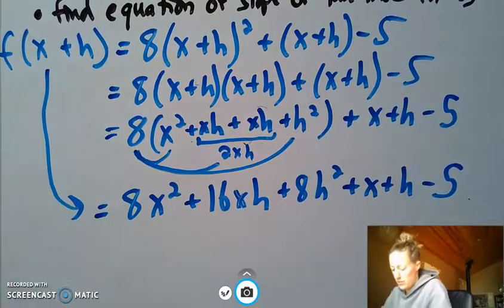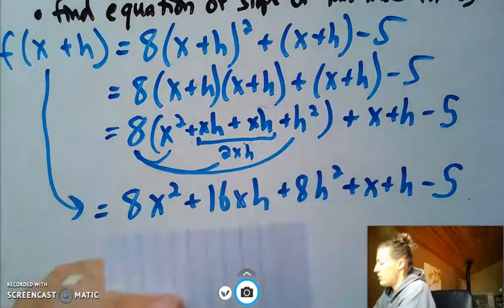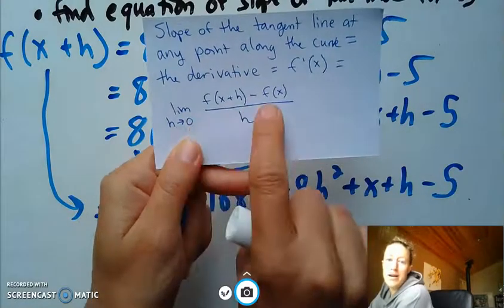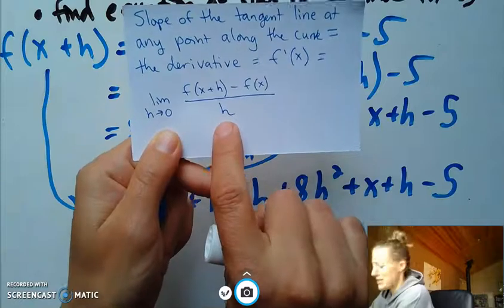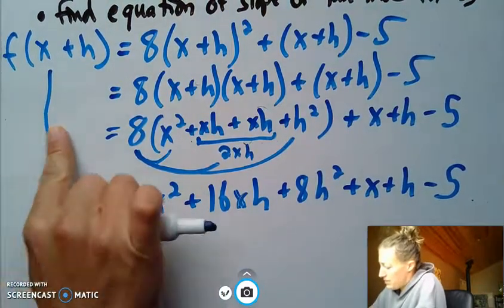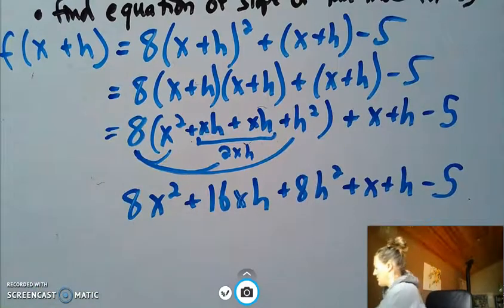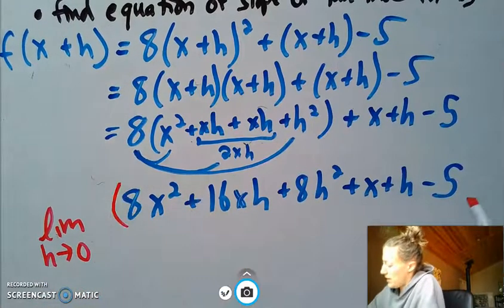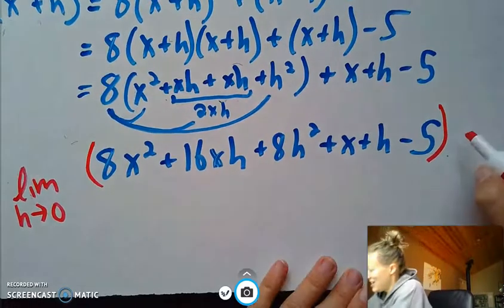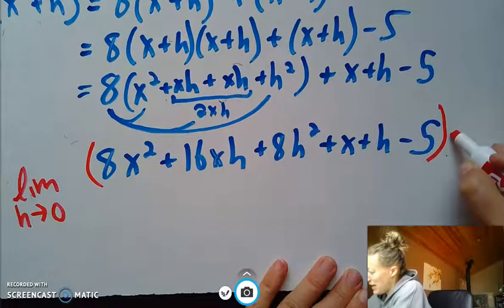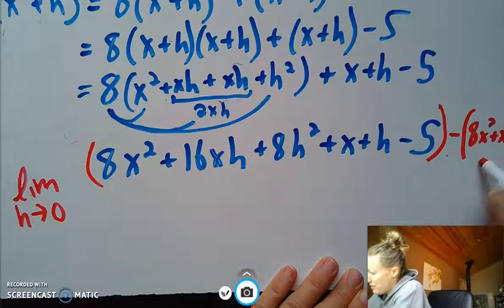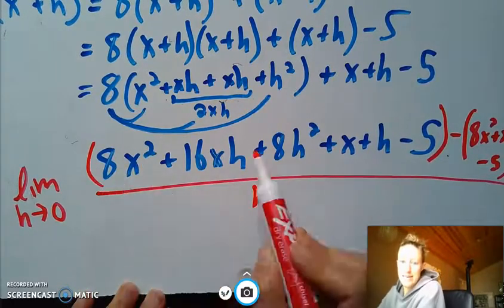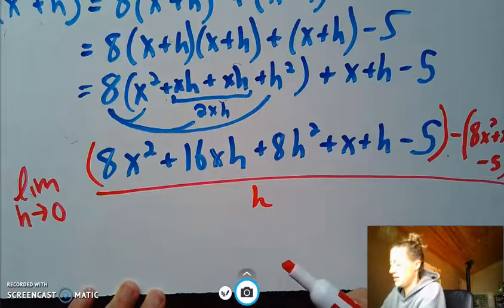But in our formula, we have a little bit more to it. So we just did this one. And we want to put the limit on there and minus f of x and all over h. So let's do that. The limit as h approaches 0 is f of x plus h, which is really long, minus f of x, which was the original 8x² + x - 5, all over h.